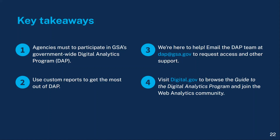Thank you for watching this talk about how to access DAP and find your agency data in GA4. After listening to this talk, we hope you walk away with four key takeaways. First, agencies must participate in GSA's government-wide digital analytics program. Second, agencies should use custom reports to get the most out of DAP GA4. Third, agencies should email the DAP team at dap@gsa.gov to request access and other support. And last but not least, remember that we're here to help. Take advantage of the online documentation at digital.gov/guides/DAP and join the web analytics community. Thank you.